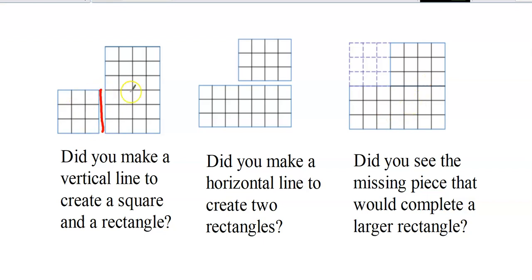You could make a vertical cut and have a square and a rectangle. You could make a horizontal cut and then have a rectangle and another rectangle. Or you could look at this differently — instead of actually breaking it into two pieces, I want to think about the missing piece.